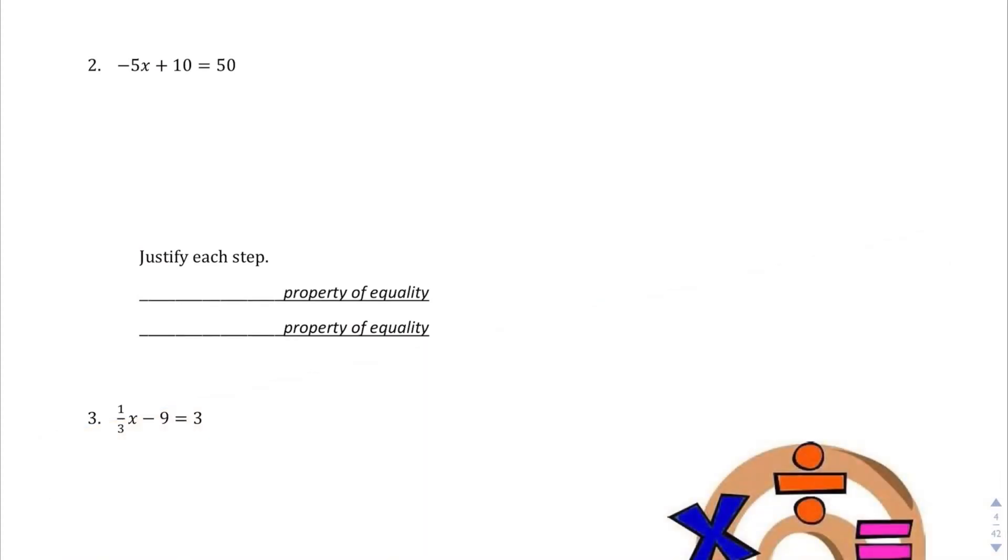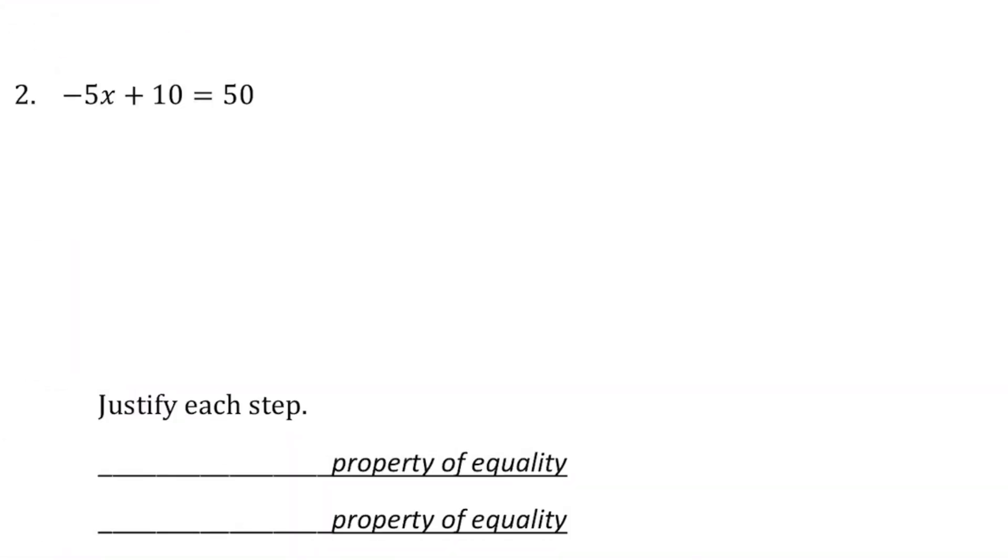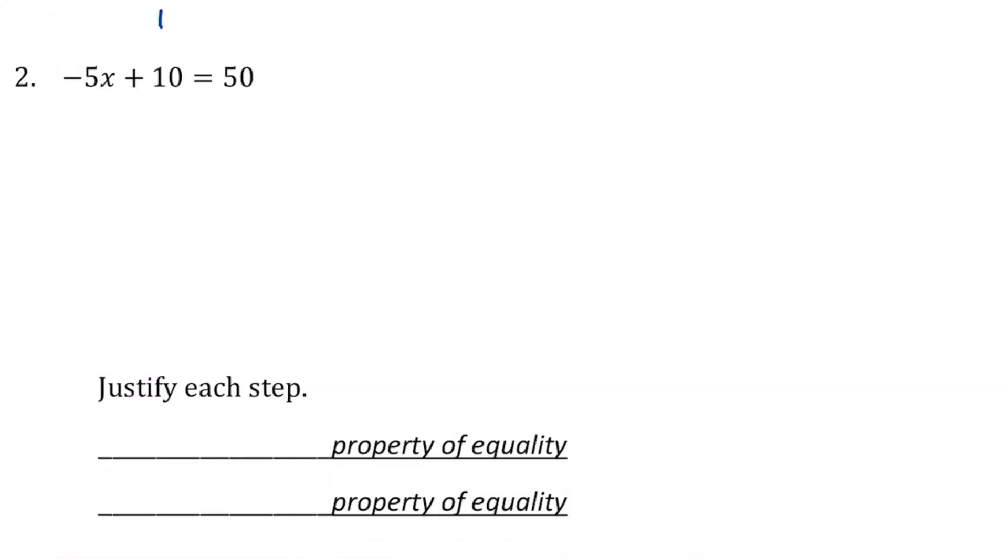Here we're going to do the same thing we did before, but we're going to also justify using the properties of equality here, but it's still relatively easy. So we have -5x + 10 = 50. I'm going to get rid of this guy first by subtracting 10 from both sides.